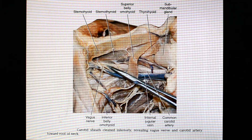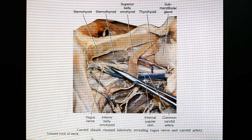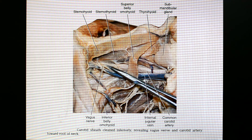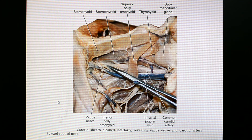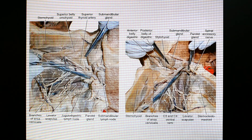Here is a larger view. The sternocleidomastoid muscle is visible, as is the superior belly of the omohyoid. The scissors are pointing towards the carotid sheath, which is cleaned inferiorly, revealing the vagus nerve and carotid artery towards the root of the neck. We can see the inferior belly of the omohyoid. The vagus nerve is present in between the common carotid artery and internal jugular vein, and behind — within the carotid sheath. The carotid sheath is very important for theory questions as well. Branches of the ansa cervicalis are visible here, along with the submandibular salivary gland.